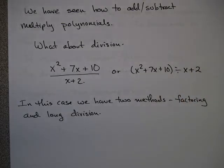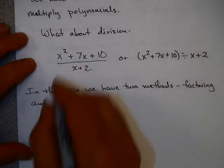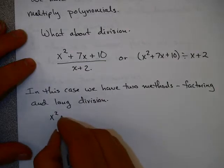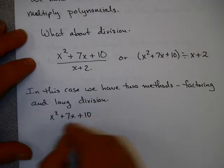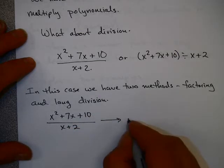In this case we have two methods, factoring and long division, and I'd like to go through both of them. Let's take a look at this first problem, this first format. x squared plus 7x plus 10 over x plus 2. Can you factor the numerator?